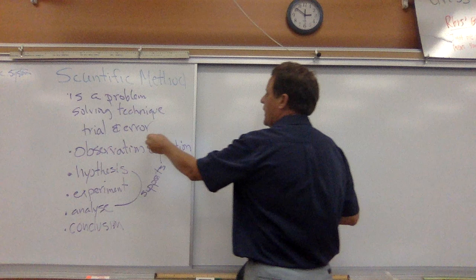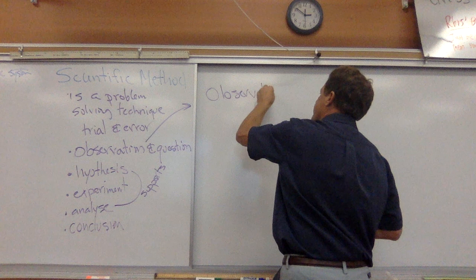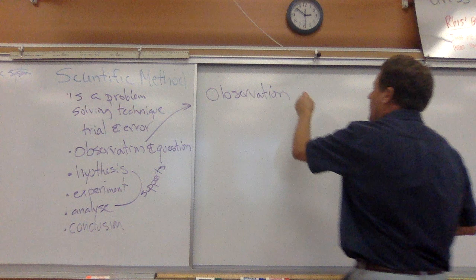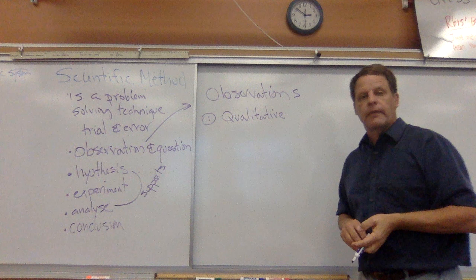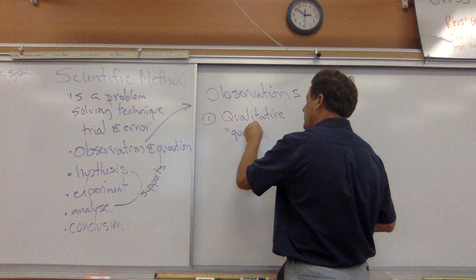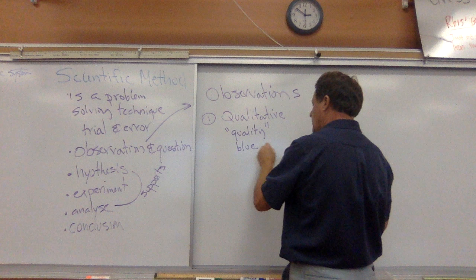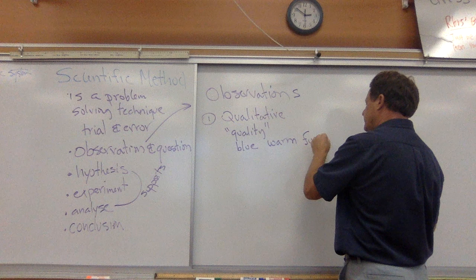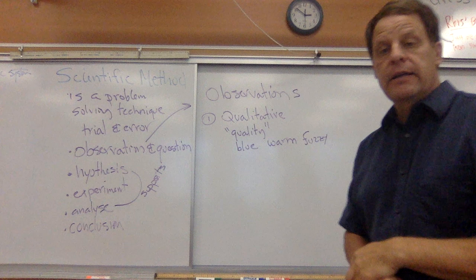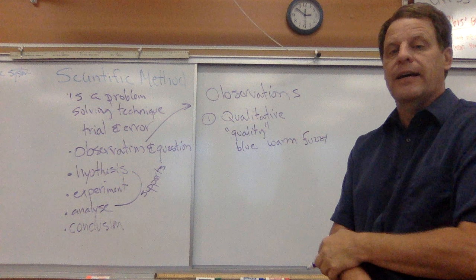I'd like to elaborate a little bit more about observations. There are two types of observations. The first would be qualitative. Qualitative is giving you the quality of something — it could be blue, it could be warm, it could be fuzzy. Those qualities can be important to describe things in science, but what is more important in science than a qualitative observation is a quantitative observation.